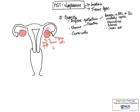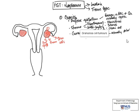For ovarian stromal tumors, these would include fibrothecomas, Sertoli-Leydig cell tumors, as well as granulosa cell tumors. Unlike the epithelial tumors grossly, these are often more solid in appearance. They may also give rise to some virilizing signs.